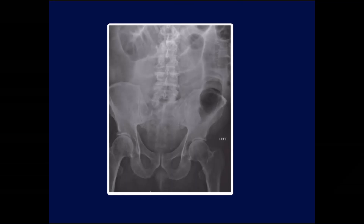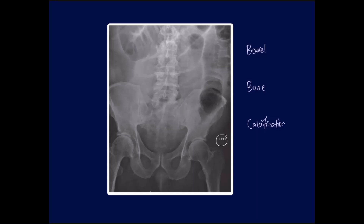Here is the abdominal X-ray of Mr. Wesley. Let's write down the algorithm first: bowel, bone, and calcification. Look at the patient details first — name, date of birth, and time the film was taken. Note the left and right sides of the patient. The projection is supine AP view. For exposure, I don't clearly see the diaphragm here, and the dilated bowel extends somewhere out of frame, so this is not a well-exposed film — the entire abdomen from diaphragm to pelvis is not fully visible.